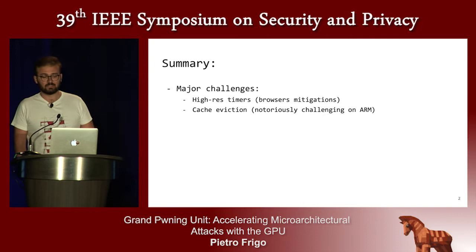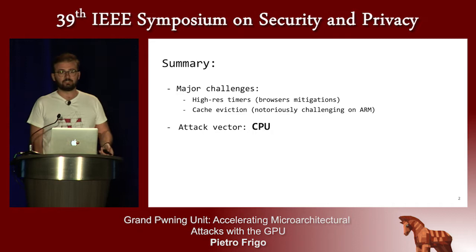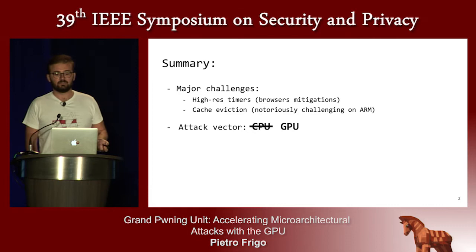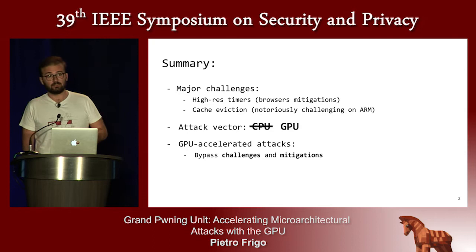What we noticed is that the thing common to all these attacks is that they use the CPU as the attack vector. So the idea we had was: it's about time someone looked at a different attack vector. We switched our threat model from the CPU to the GPU. Once you move the threat model to the GPU, we can implement all these attacks, and not only implement them but bypass all the challenges and mitigations introduced in the past.